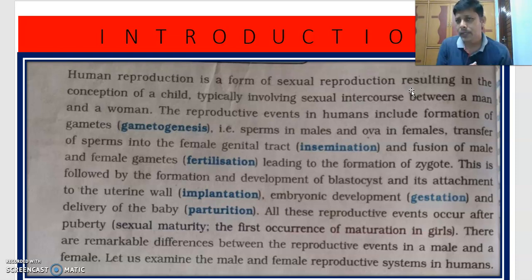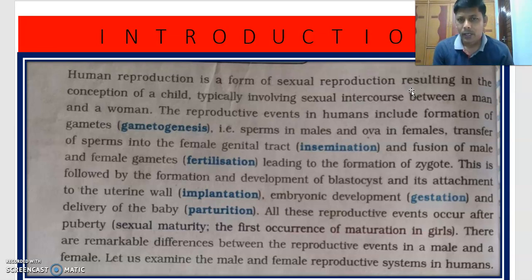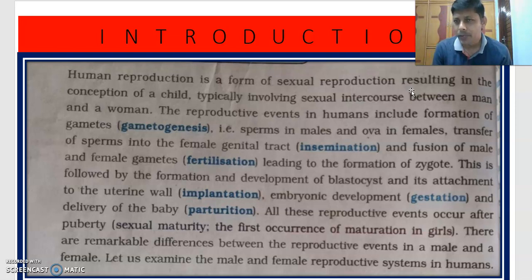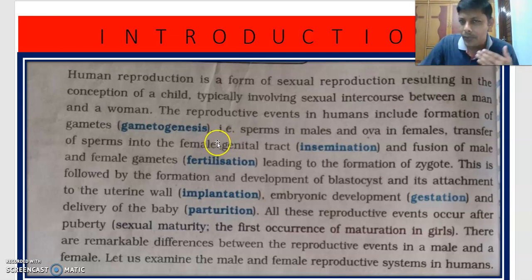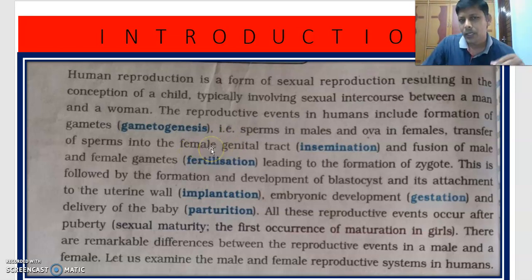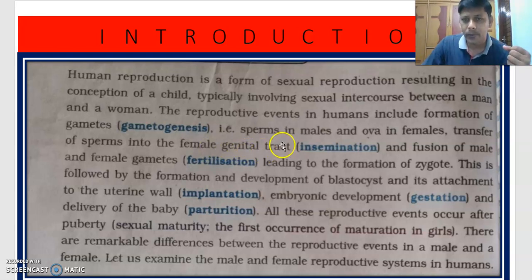The reproductive events in humans include formation of gametes — that means formation of sperms in males and formation of ova in females. The second reproductive event is the transfer of gametes into the female genital tract, into the vagina of the female, that is called insemination.